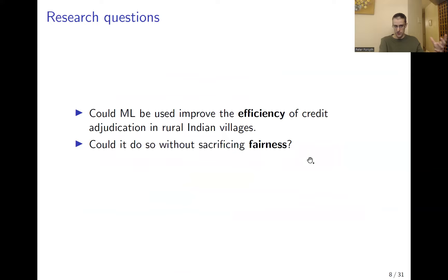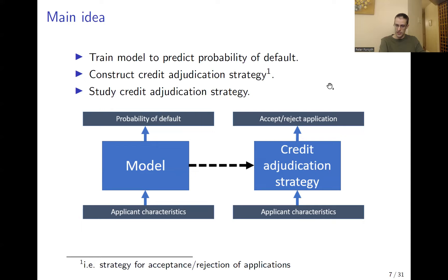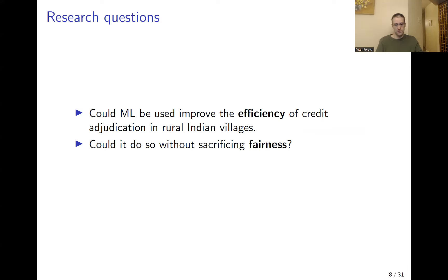The author then wants to study various characteristics of the credit adjudication strategy. The research questions are: first, could machine learning be used to improve the efficiency of credit adjudication in rural Indian villages? And second, could it do so without sacrificing fairness? Efficiency and fairness are the author's main goals in their analysis of this data-driven credit adjudication strategy.